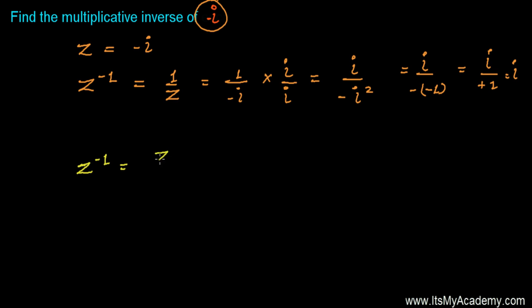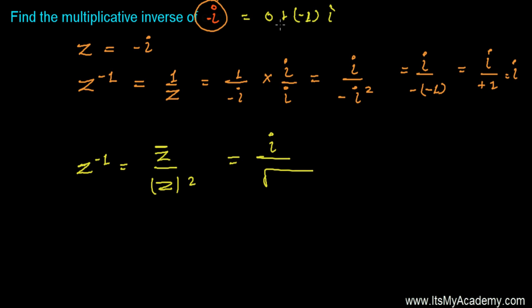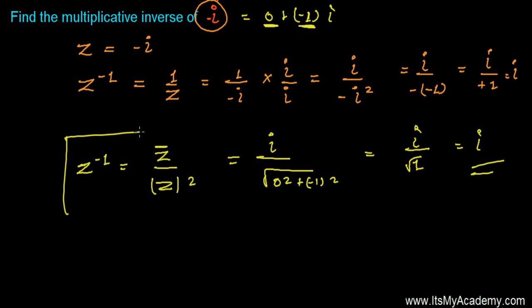The multiplicative inverse of z is the conjugate of z divided by the absolute value of z squared. So the conjugate of z — it's minus iota — so it will be simply plus iota. The absolute value of z is the square root of the square of the imaginary part plus the square of the real part. Here the real part is zero and the imaginary part is minus one, so it's zero squared plus minus one whole squared under root, which is just one. So the answer is simply iota. This is the formula to find out the multiplicative inverse of any complex number.